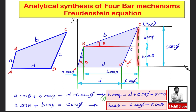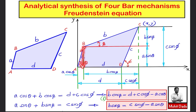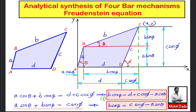Similarly, the y-coordinate of point C can be written as c·sin(φ). It also equals a·sin(θ) plus b·sin(β). Rearranging gives b·sin(β) = c·sin(φ) − a·sin(θ). Call this Equation 2.